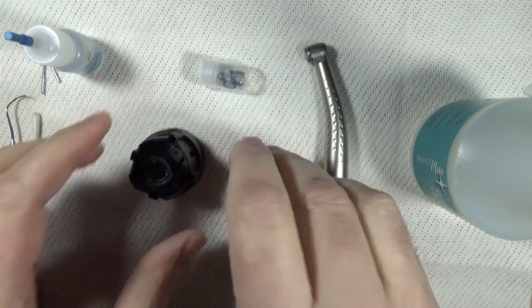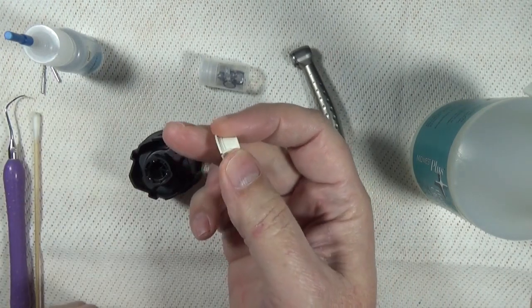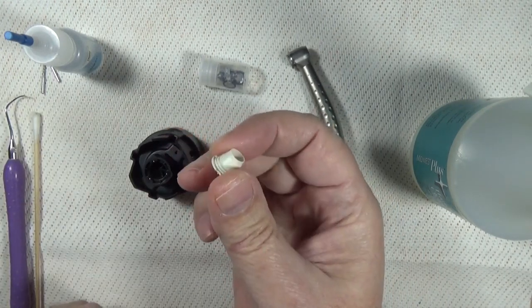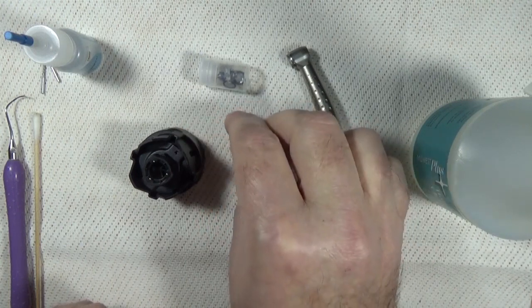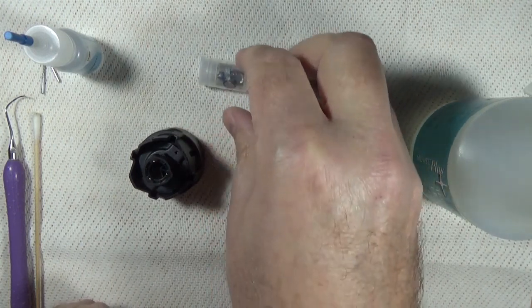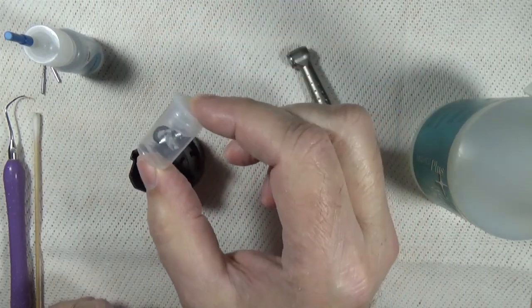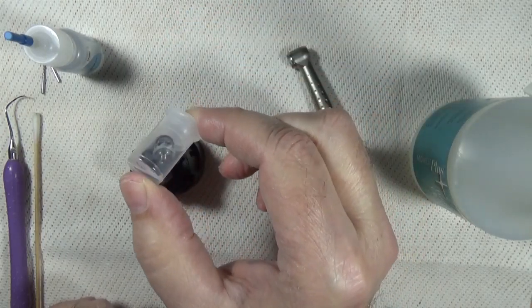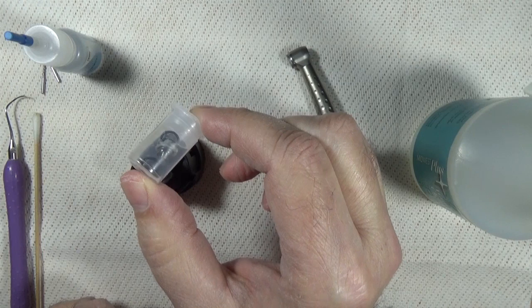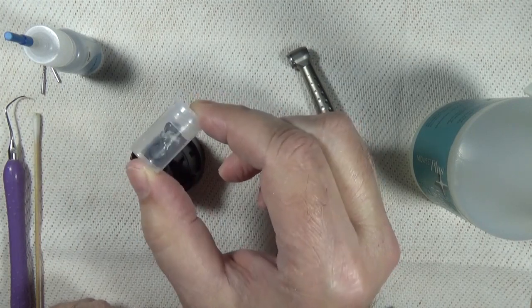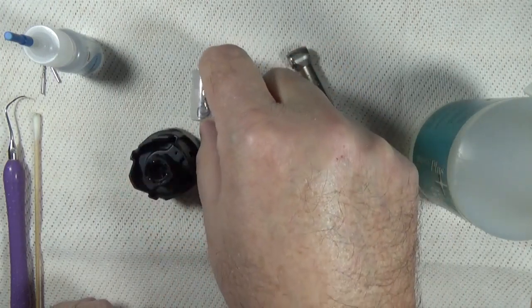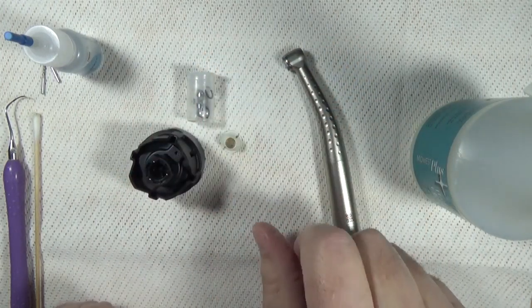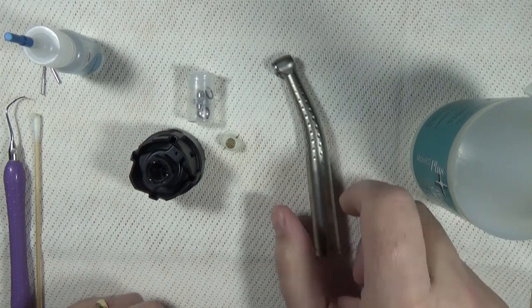There's a small o-ring insertion tool which is going to aid in reinstalling the suspension o-rings into the handpiece. And then our little vial here contains the new turbine, the two wave washers, and the two suspension o-rings.